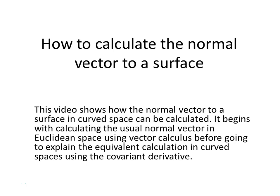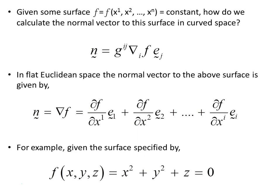This video shows how the normal vector to a surface in curved space can be calculated. It begins with calculating the usual normal vector in Euclidean space using vector calculus, before going on to explain the equivalent calculation in curved spaces using the covariant derivative. A subscriber asked for this video because in a previous video this expression was given and he was wondering how it could be used to calculate the normal. What I want to point out is it's not really all that different from the familiar vector calculus in Euclidean space.